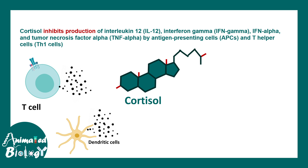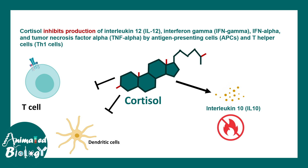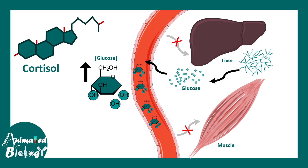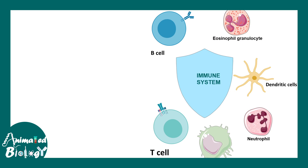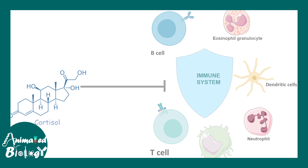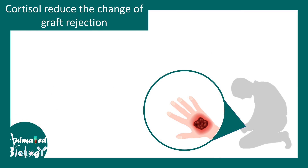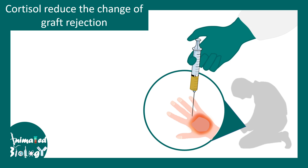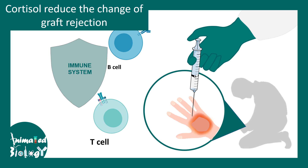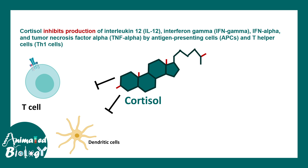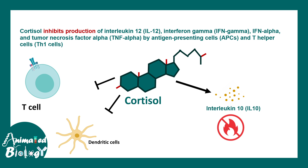Cortisol suppresses the immune system by preventing T cells and dendritic cells from secreting cytokines such as interleukin-12 and interferon-gamma. Cortisol also triggers the formation of interleukin-10 by T regulatory cells, which is anti-inflammatory in nature. So overall, cortisol increases blood glucose level and is a potent immunosuppressing agent — especially given during tissue graft operations. It inhibits the immune system by inhibiting interleukin and interferon production while promoting interleukin-10 production.